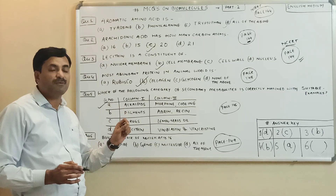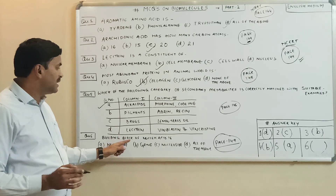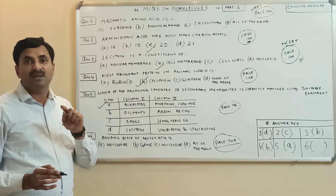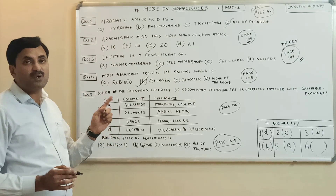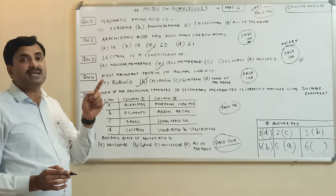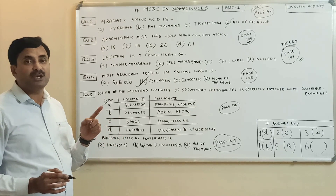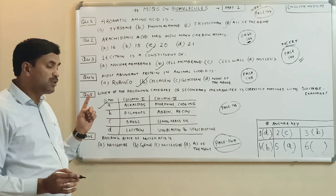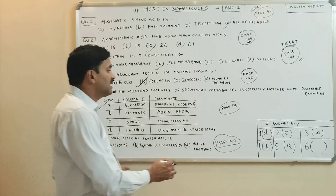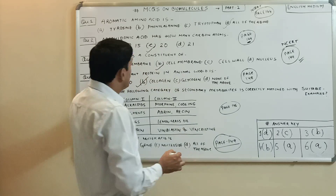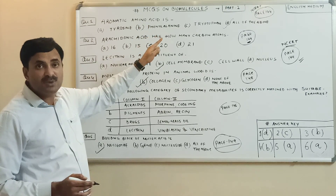Question number six: what is the building block of nucleic acid? A small part of nucleic acid is given in NCERT Class 11 in the biomolecules chapter. Nucleic acids are of two types — DNA and RNA — and both are polymers. The building blocks of nucleic acids, meaning the monomers from which they are made, are nucleotides. So the answer to question number six is option A — nucleotide.